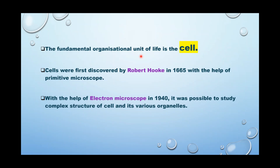It was first discovered by scientist Robert Hooke in the year 1665 with the help of a self-designed microscope. Not much of the complex structure of the cell was studied with this microscope. Only after the invention of the electron microscope in 1940 was the complex structure of the cell studied better.